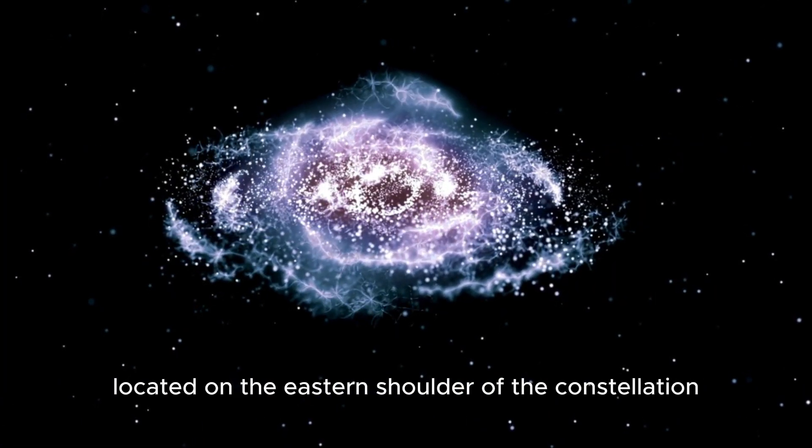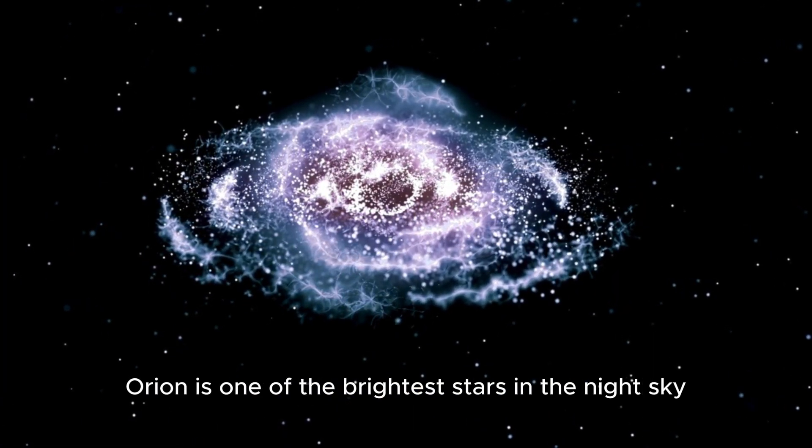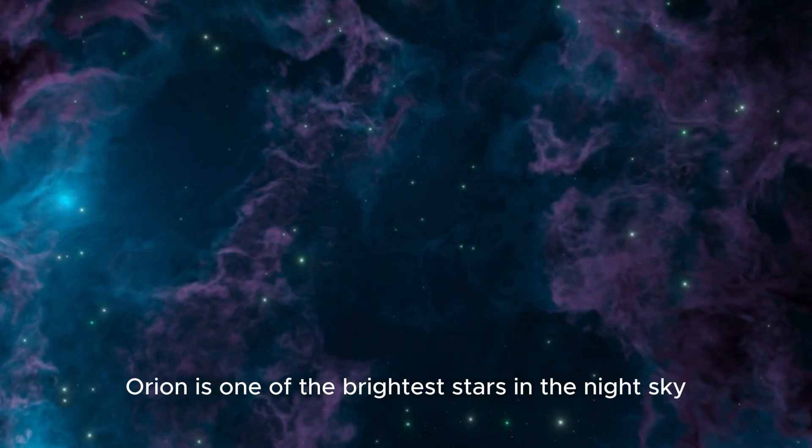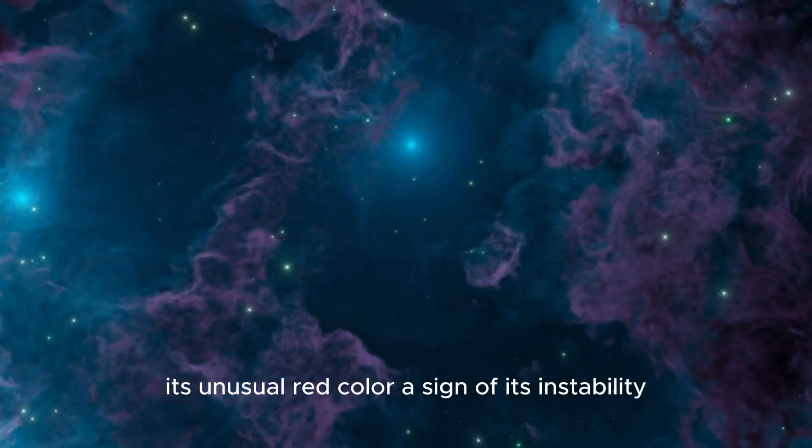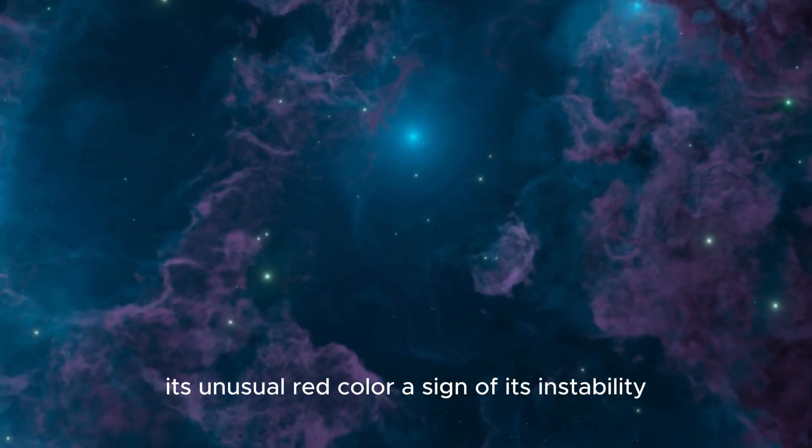Betelgeuse, located on the eastern shoulder of the constellation Orion, is one of the brightest stars in the night sky. Its unusual red color, a sign of its instability, has been the subject of intense study.